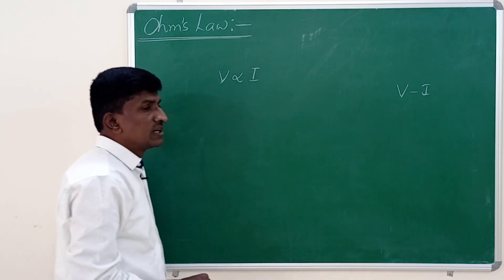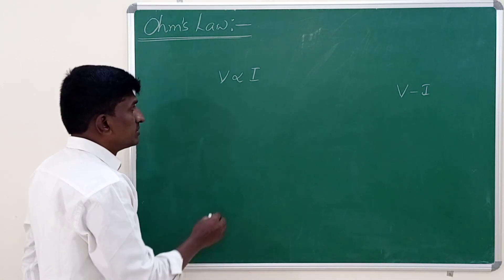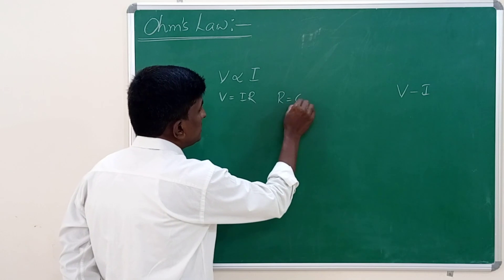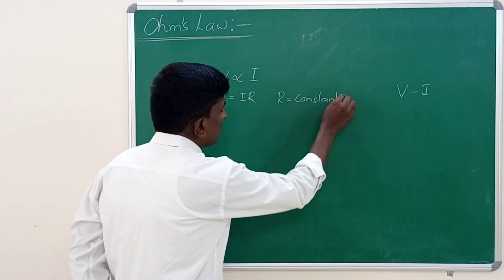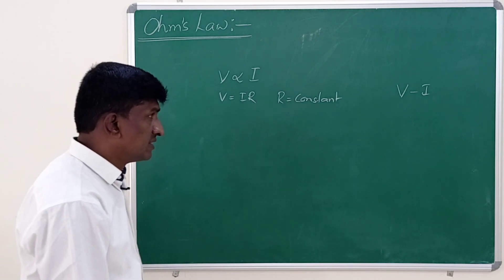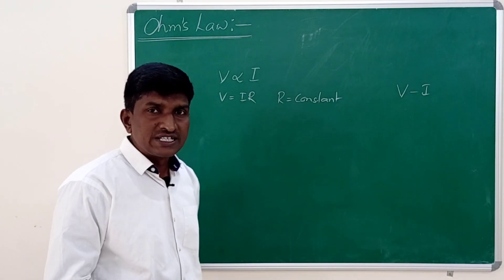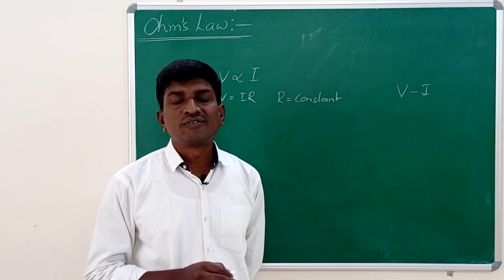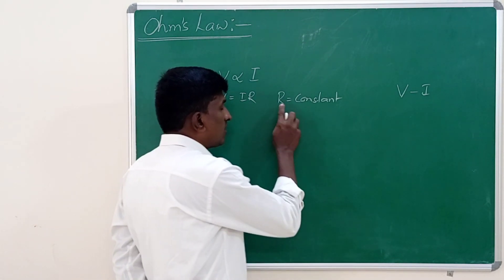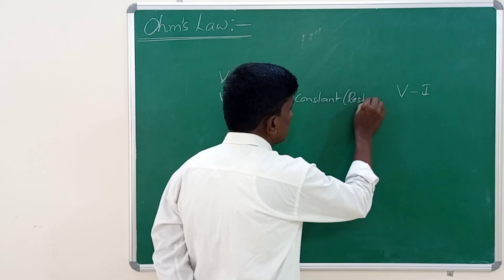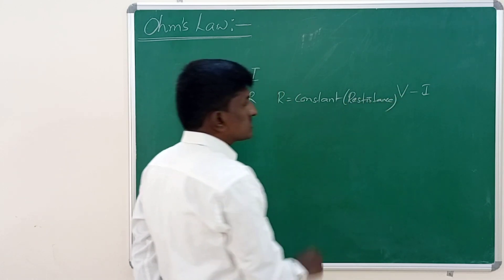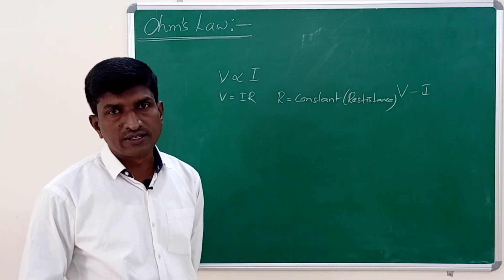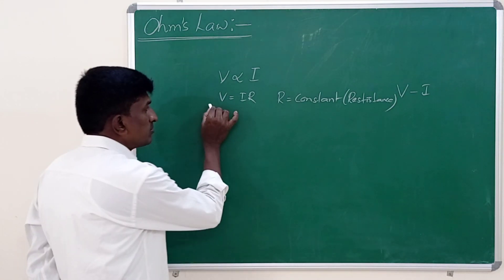This can generally be written as V equal to IR, where R is a constant. This R is also known as resistance. Resistance is nothing but the obstruction of free flow of electrons in the conductor. So resistance is defined as the obstruction of free flow of electrons in the conductor.